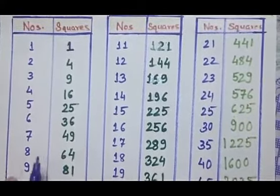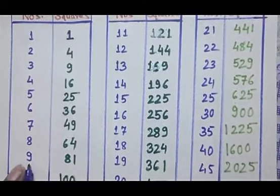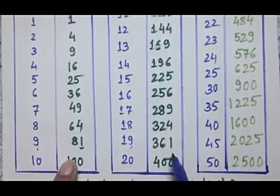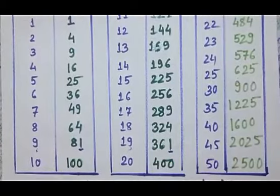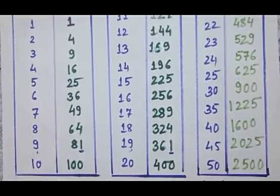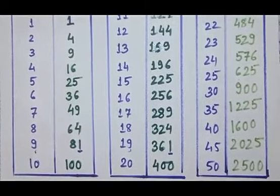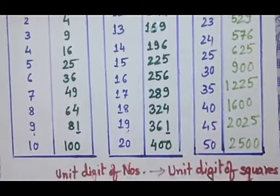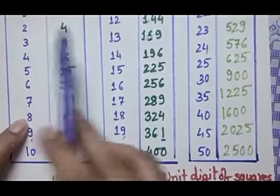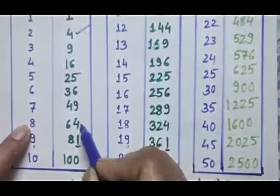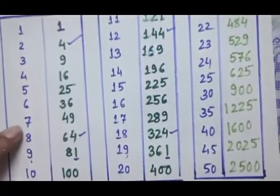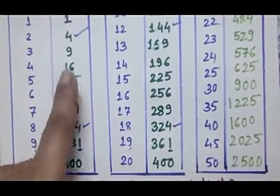Similarly, one more pattern in this chart: if the last digit of a number is 9, just as 9 and 19, their squares have 1 as their unit digit. If a number has its unit digit as 1 or 9, their squares also have unit digit 1. If a number ends with 2 or 8, in both cases their squares are ending with 4. If a number ends with 3 or 7, their squares are ending with 9 only.